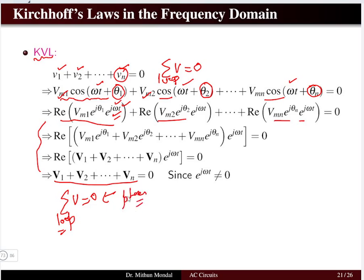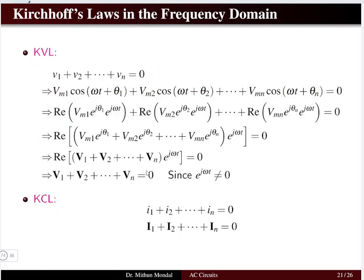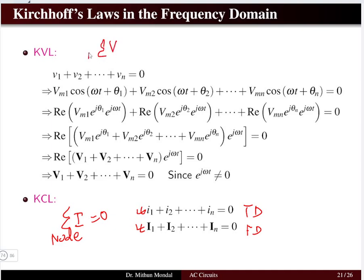In phasor format also, the KVL law holds good. For KCL, applying the same concept, we can have in the time domain as well as in the frequency domain the same result: the algebraic sum of all the currents meeting at a particular node is equal to zero. So the algebraic sum of all voltages at a particular loop — a closed mesh — is equal to zero, and the algebraic sum of all currents at a particular node is zero both in the time domain and in the frequency domain as phasors.